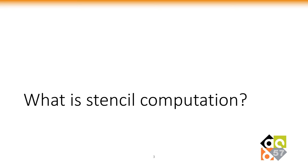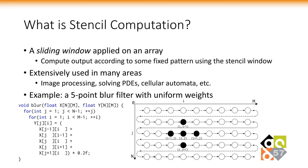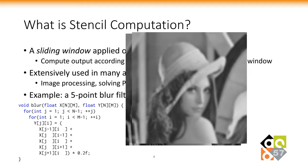Seeing the title, you probably want to ask: what is stencil computation? Stencil computation is usually defined as a sliding window applied on an array, computing output according to a fixed local pattern. This slide shows a five-point blur filter, which applies a star-shaped window to the input and produces the average at the output. If we apply a blur filter on an input image like this, we will get it blurred as the output.